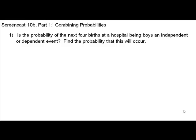We want to know, is the probability of the next four births at a hospital being boys an independent or dependent event. If it is a dependent event, then the outcome of the first birth affects the outcome of the second birth. And we know that that actually does not happen.